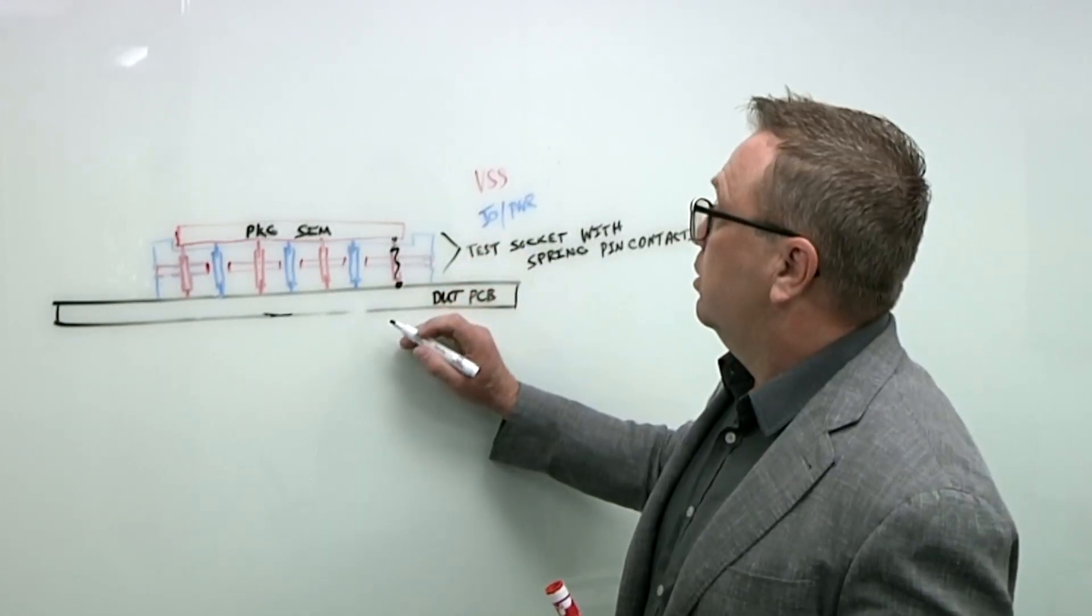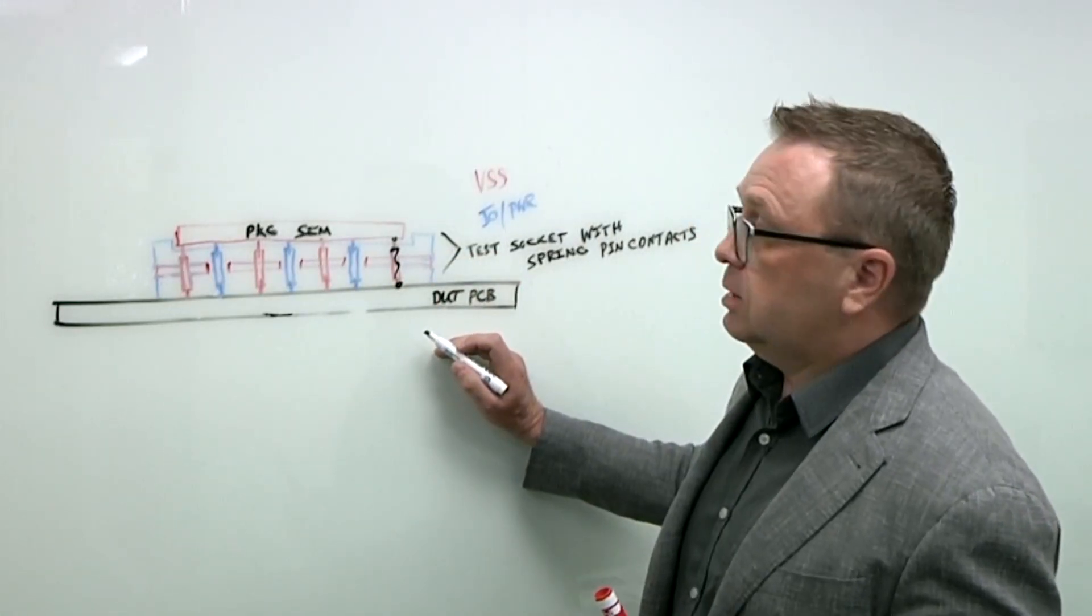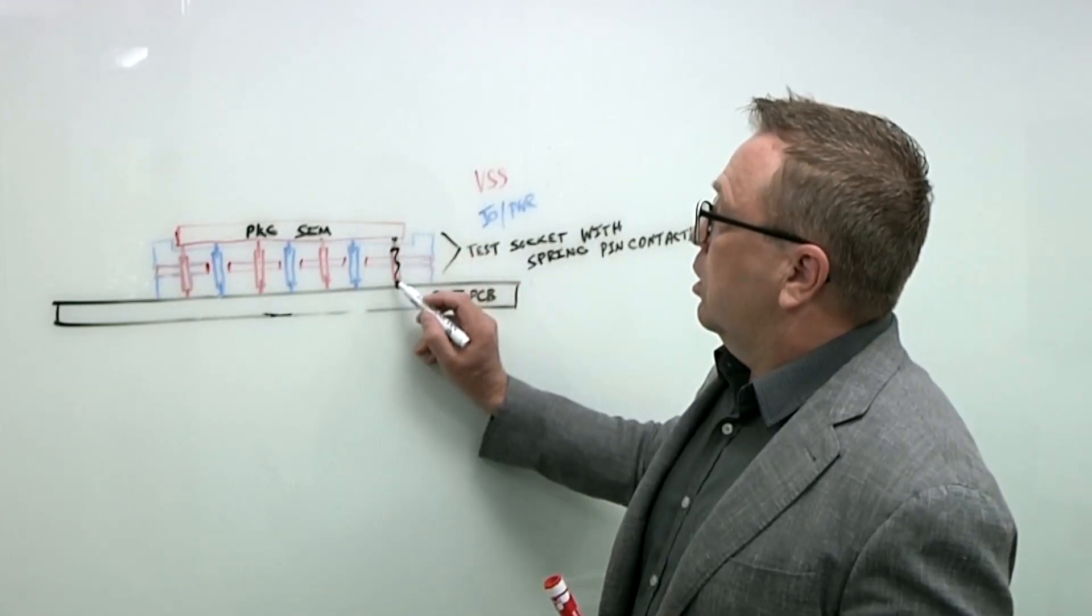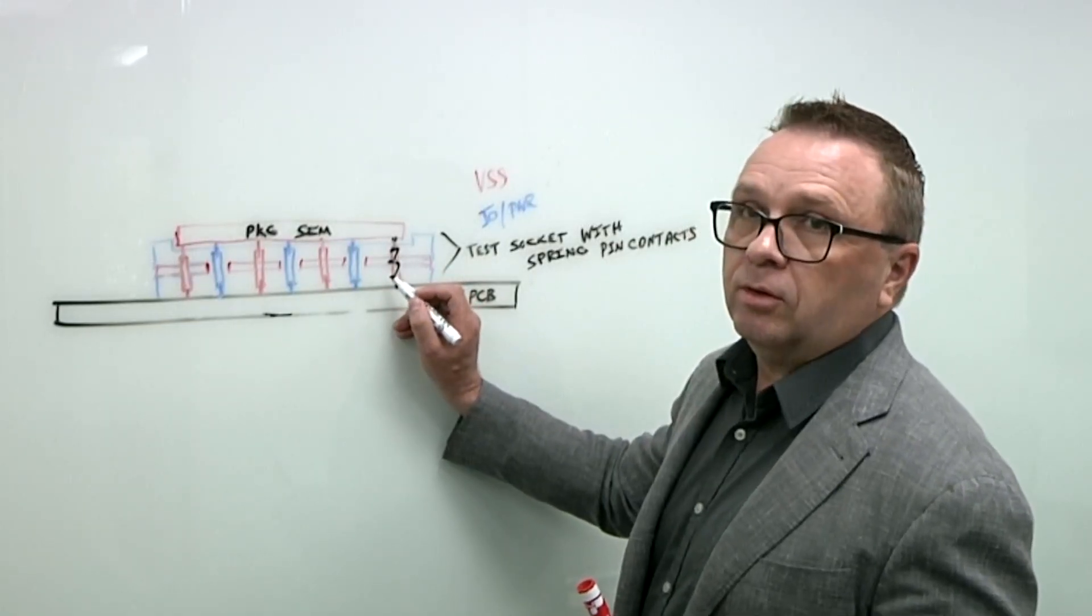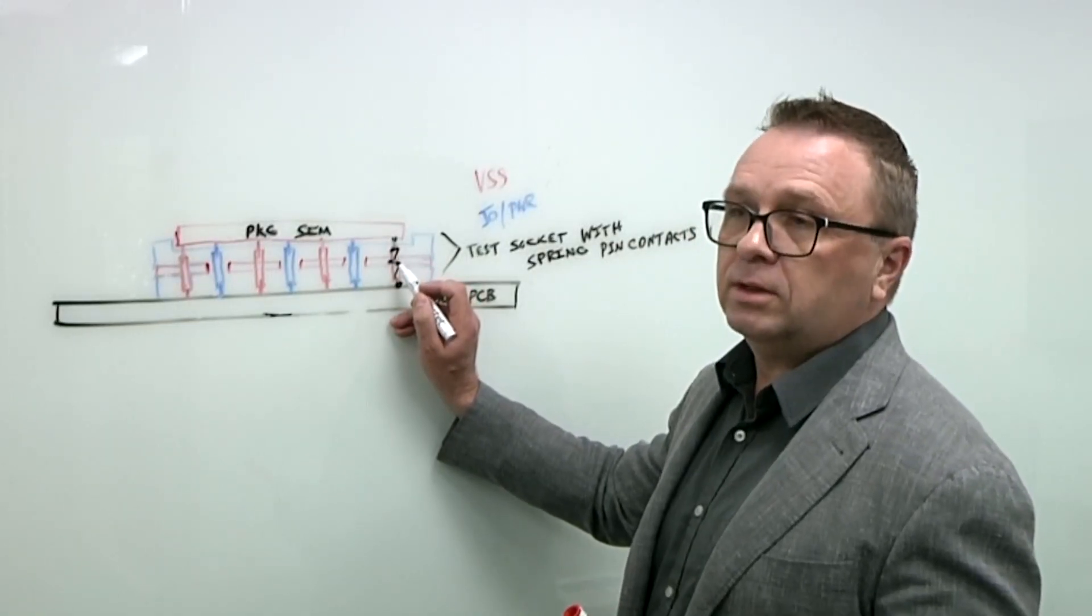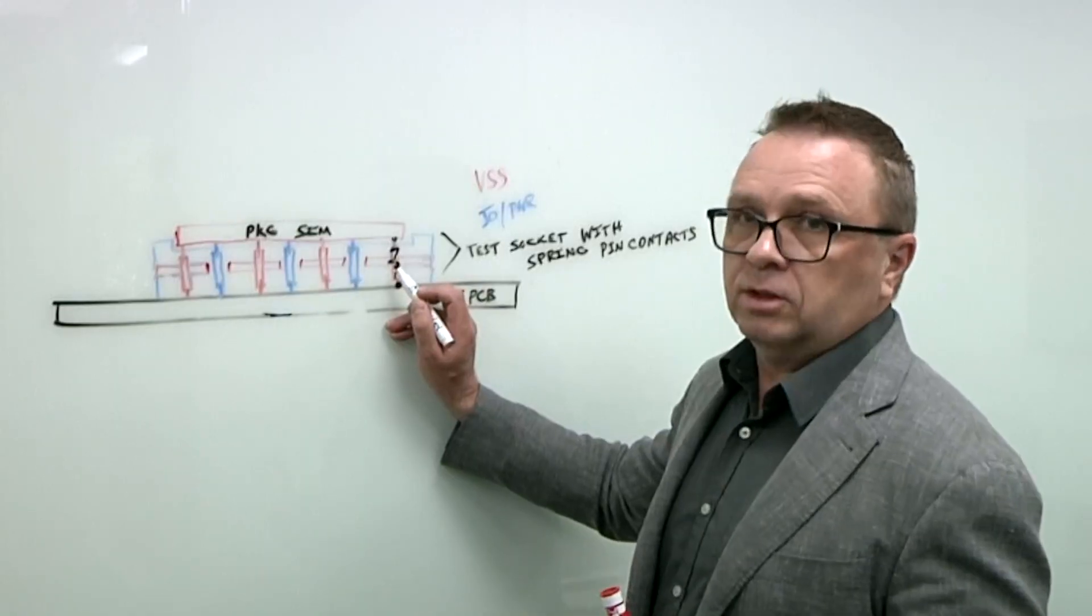Now with the addition of the coaxial shield test, we also need to make sure that this shield is performing that there's good contact between the ground pin and the shield. Otherwise, the shield performance is degraded.